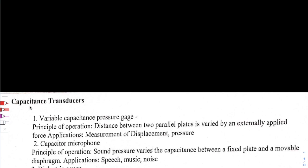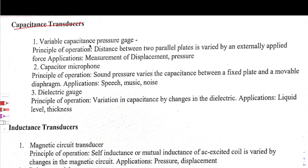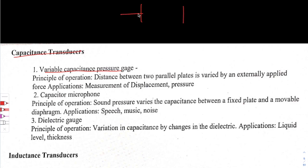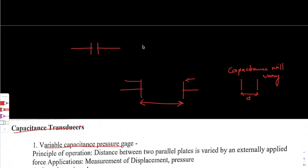Coming on to capacitive transducers: by the name, they use capacitors to convert signal energy. The first is the variable capacitance pressure gauge. Its principle of operation is that the distance between two parallel plates is varied by an externally applied force, and when we change the distance 'd' of a capacitor, the capacitance varies.